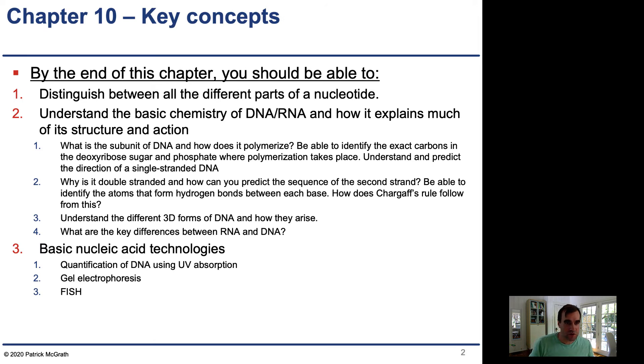The goals of this chapter are to distinguish between all the different parts of a nucleotide, which is a single subunit of DNA. We'll understand the chemistry in detail—the basic chemistry of DNA and RNA and how it explains their structure and action. What is the subunit of DNA and how does it polymerize into single-stranded DNA?